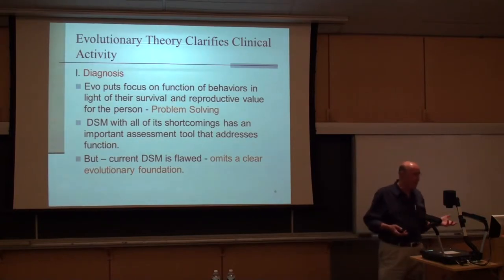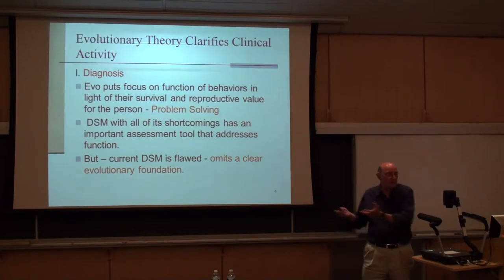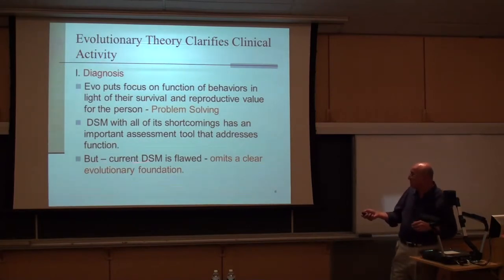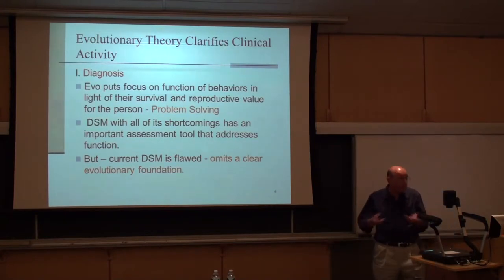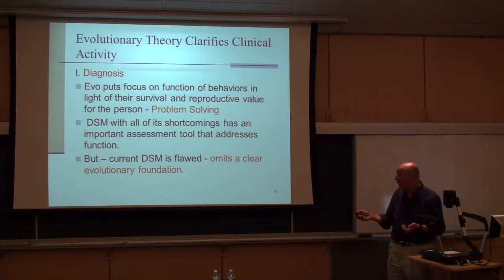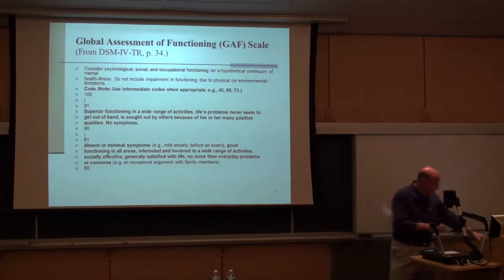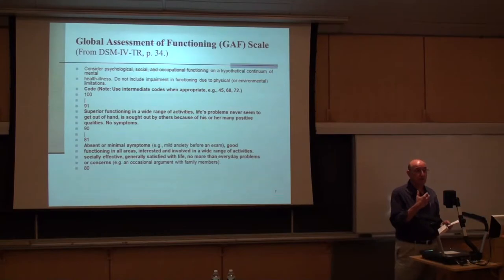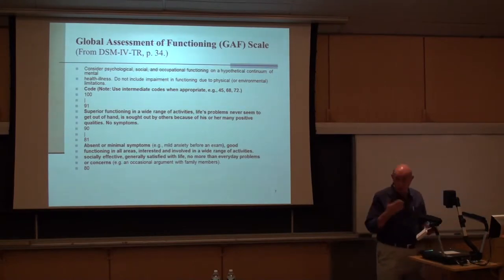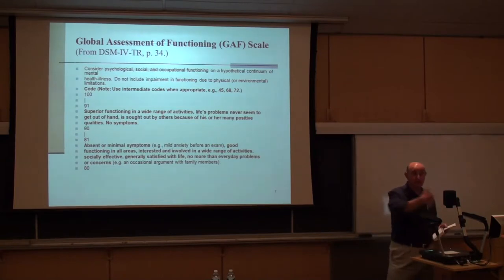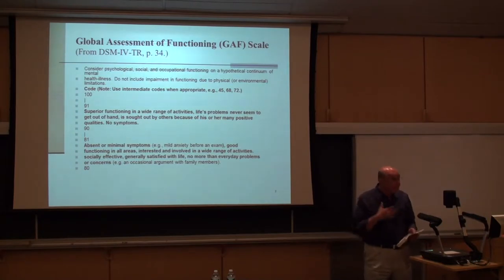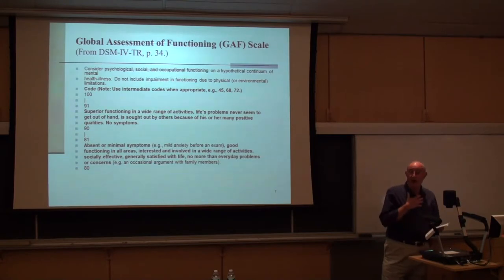It's hard to say how the DSM will change to put it on a foundation of science, especially evolutionary science — I have my doubts. The DSM is flawed and omits any clear evolutionary foundation. However, there is one aspect I like: with evolution's emphasis on function — defining behaviors in terms of their problem-solving function — there is one scale in the DSM I appreciate in that regard.